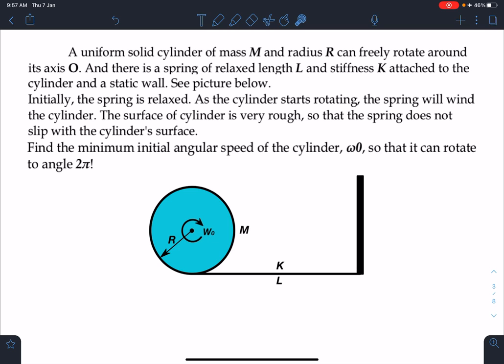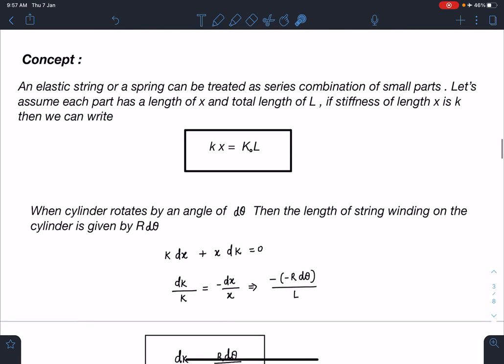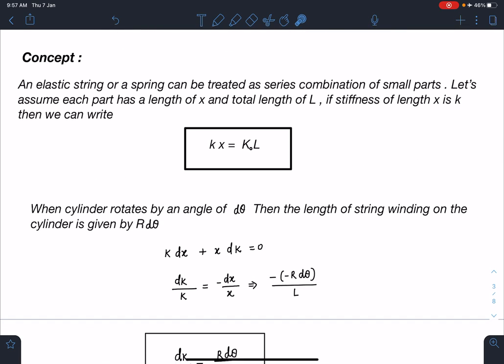There is this disc or cylinder and it is going to rotate with initial angular velocity ω₀. You have to see what is going to happen in this case. So let's discuss the concept part.